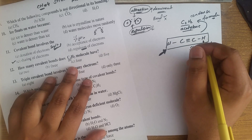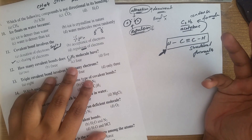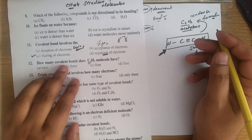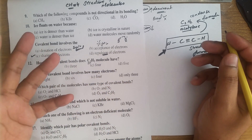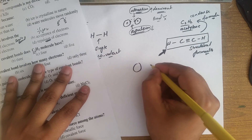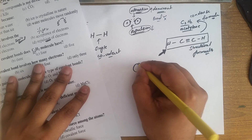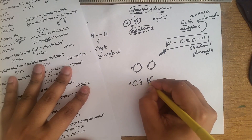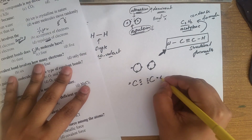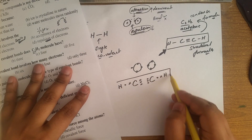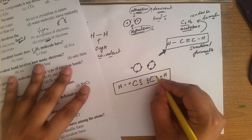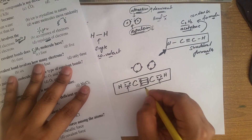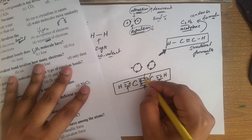How many covalent bonds does the acetylene molecule have? A carbon atom has 4 electrons in its outer shell. Counting the bond pairs: 1, 2, 3 — that is 4 — 1, 2, 3, and then the hydrogen. Each bond pair counts toward the total. I think there are 3 bond pairs: 1, 2, 3, then number 4 and 5.